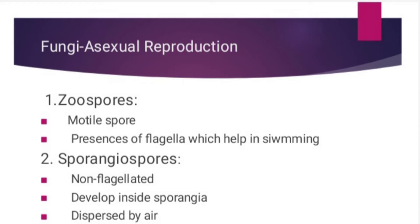The second category is known as aplanospores. These are non-flagellated, unlike the zoospores — that is, they do not have flagella. They mostly develop inside structures known as sporangia, and they are produced in large numbers because they are dispersed by air. Since they have no flagella, they cannot move on their own. They need to disperse from one place to another, and this is done by air. Hence, in order to disperse, a large number of aplanospores are formed.